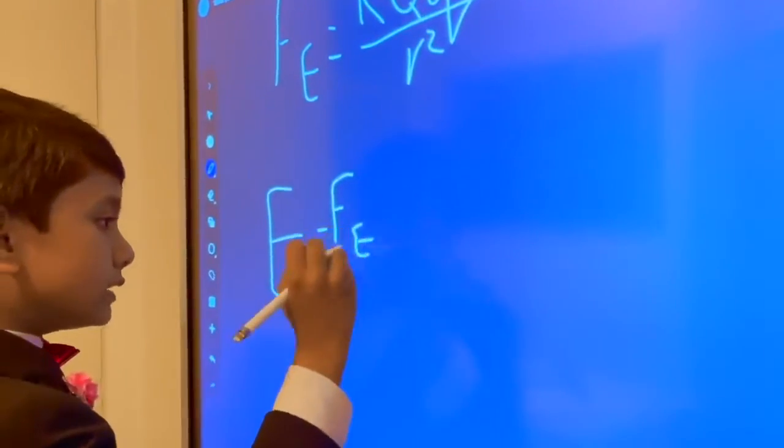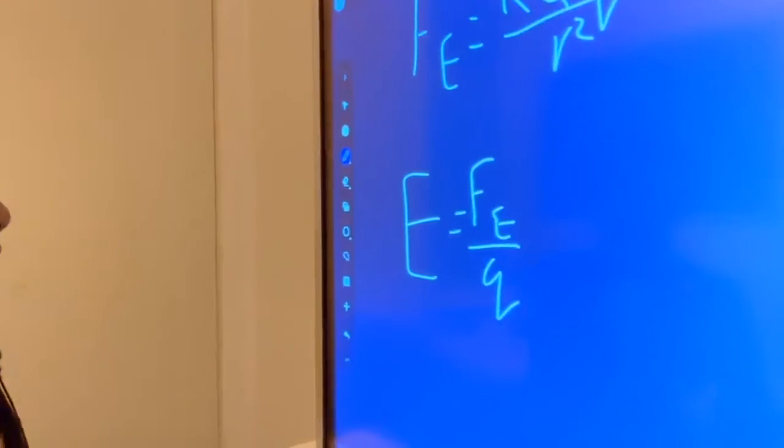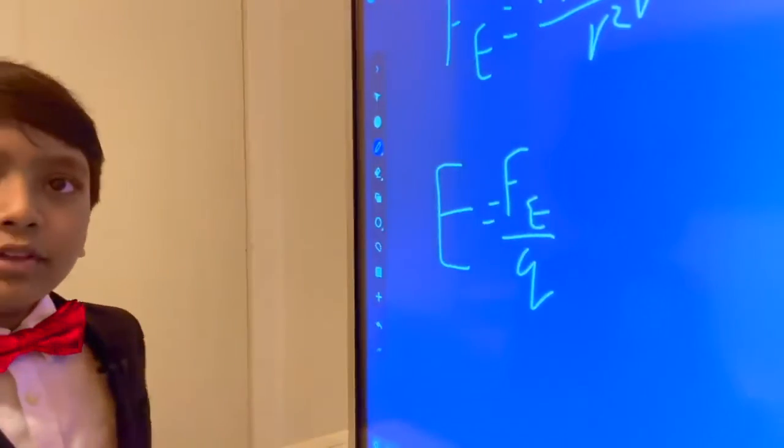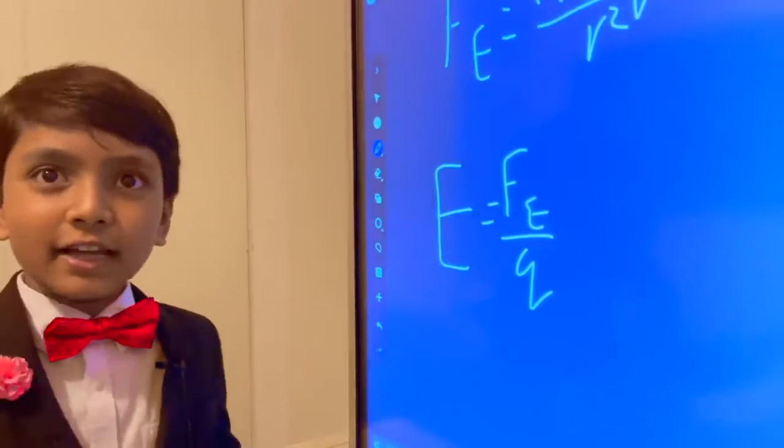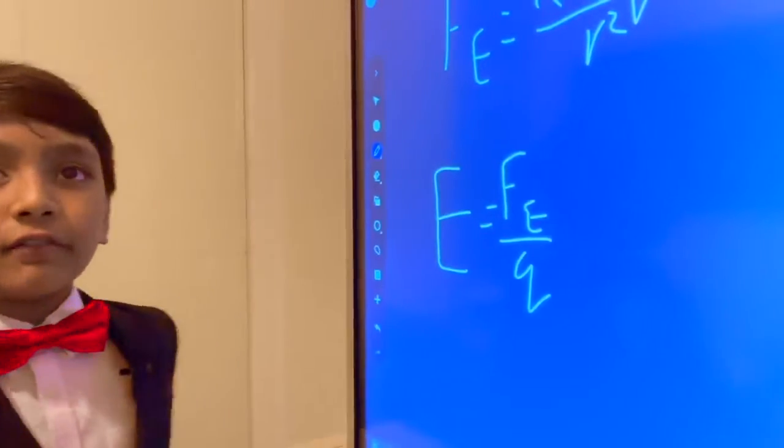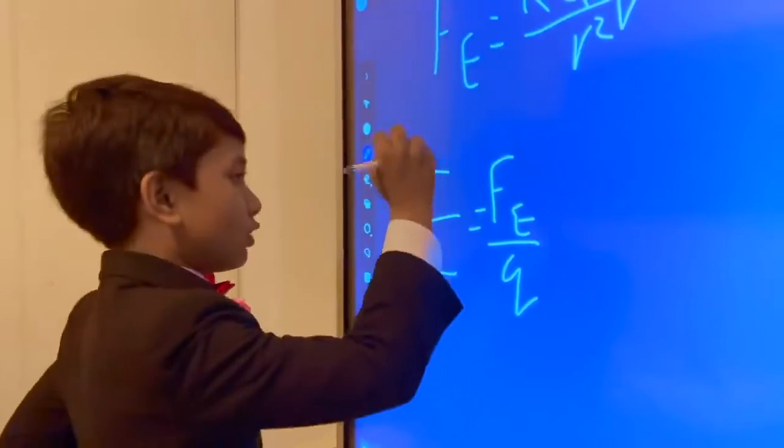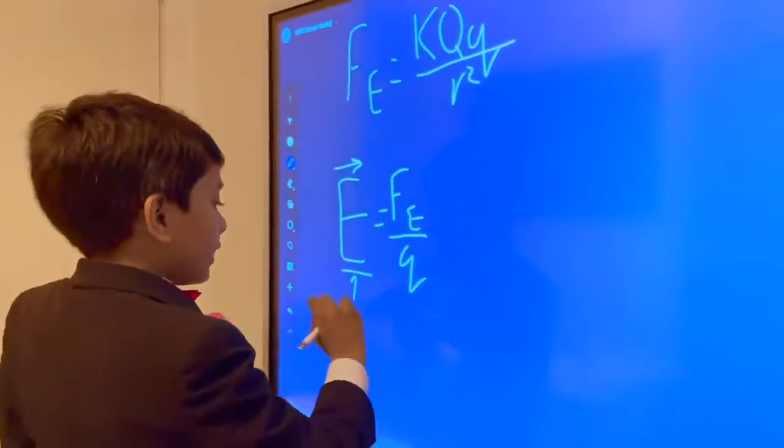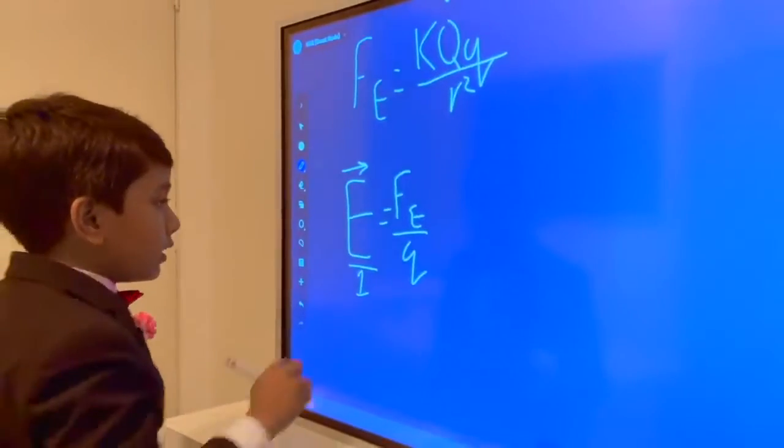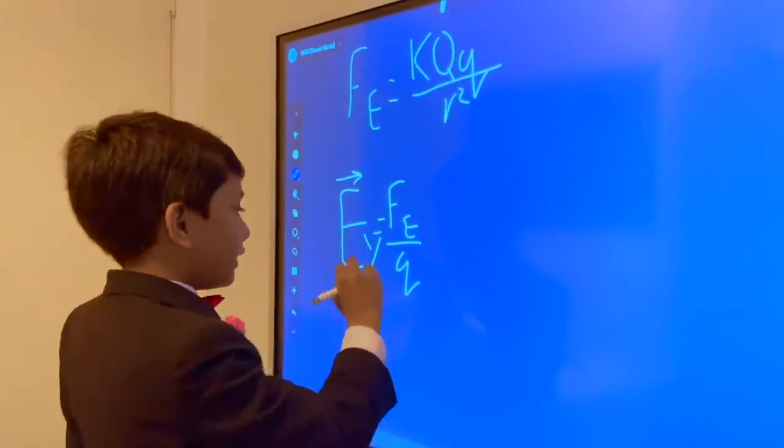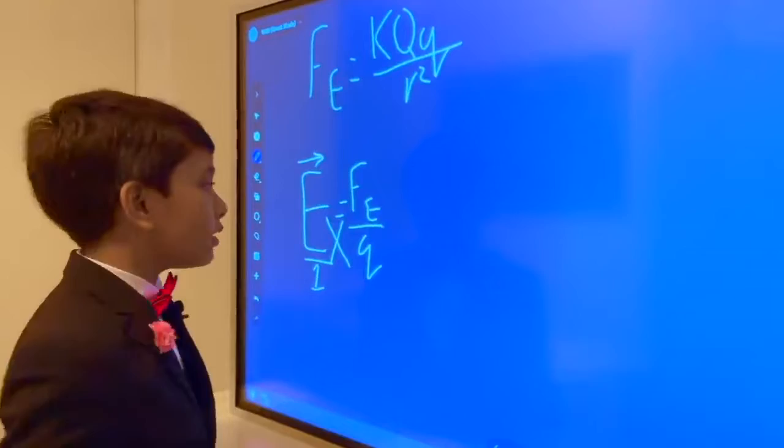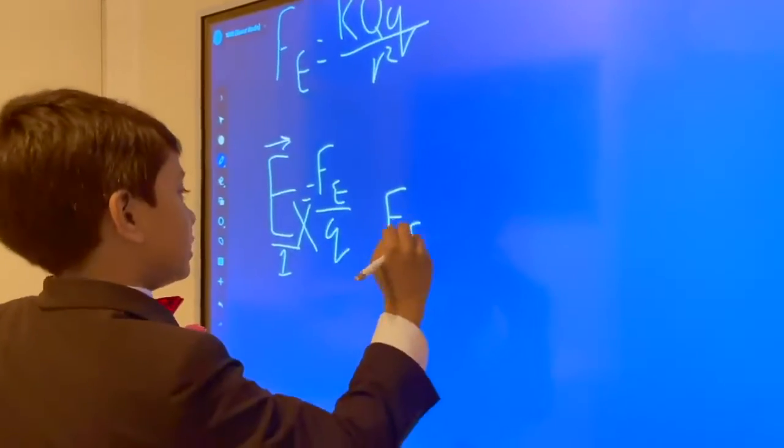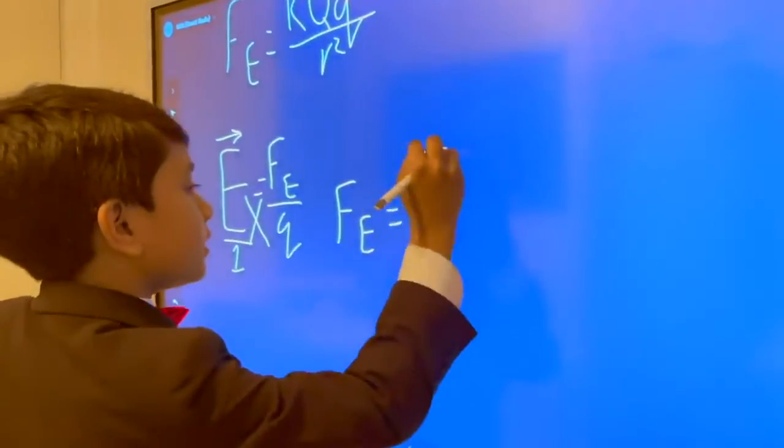Also, discovered by Coulomb. E equals FE over Q. And now, what is E, you may ask? Well, it's a fancy science term for electric field strength, which is also a vector. Anyways, now what we do is we're going to cross multiply. So when we cross multiply, you should know because you went to 6th grade, I presume.